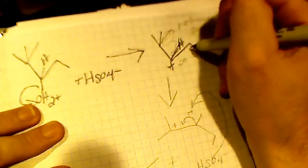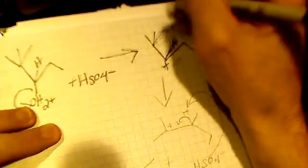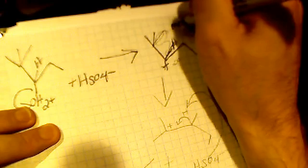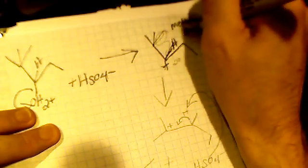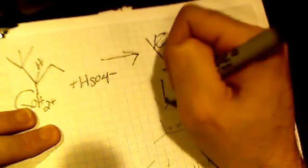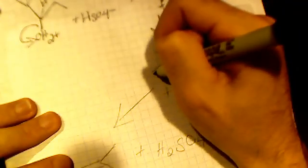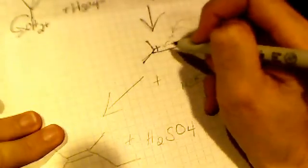So, in order to make that more stable, we get a methyl shift. This methyl group right here shifts over here, and this becomes a tertiary carbon where the methyl group shifted from.